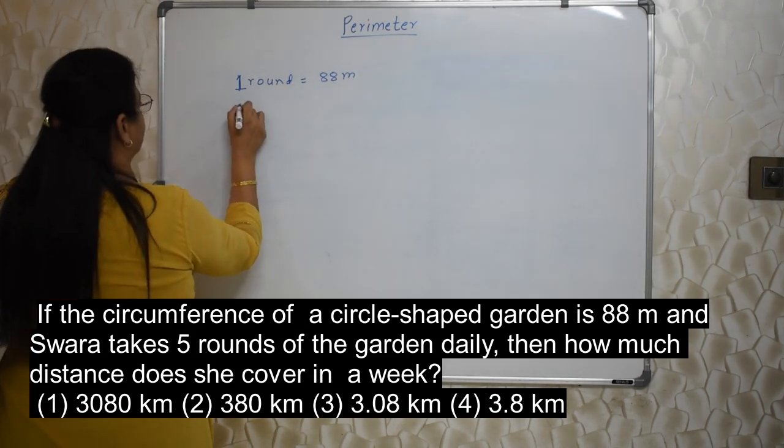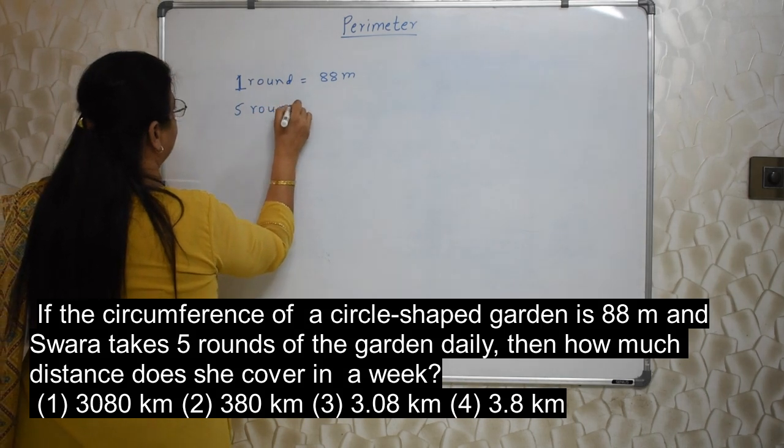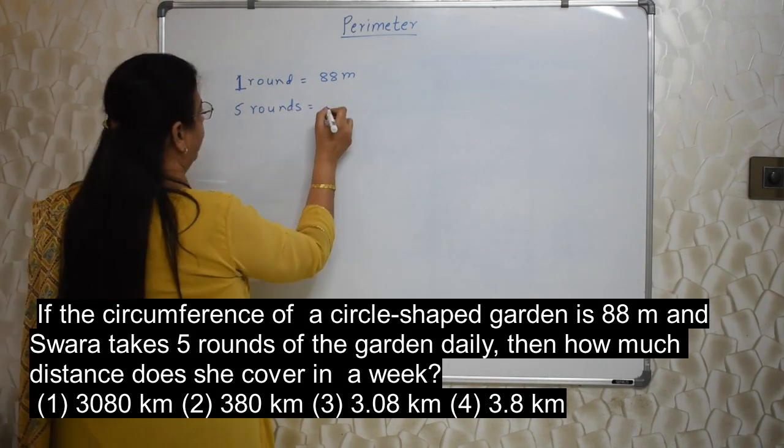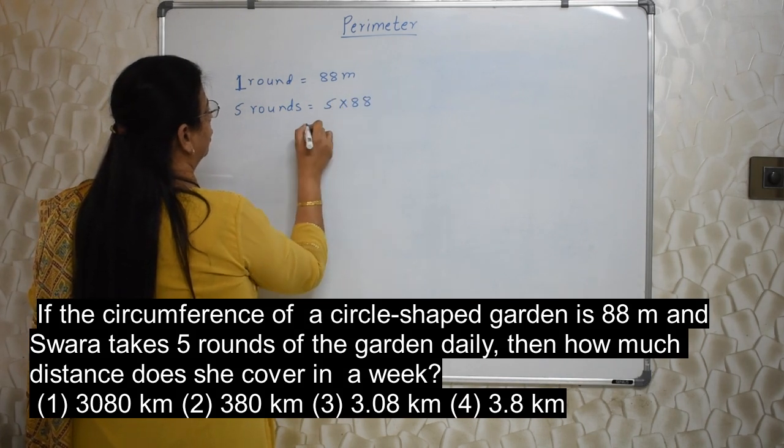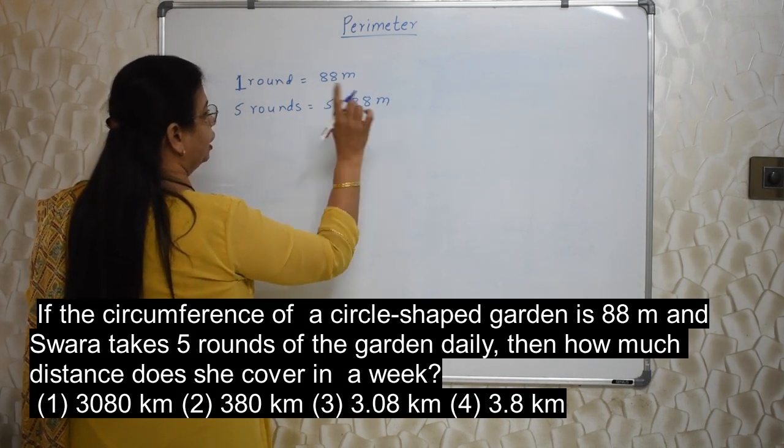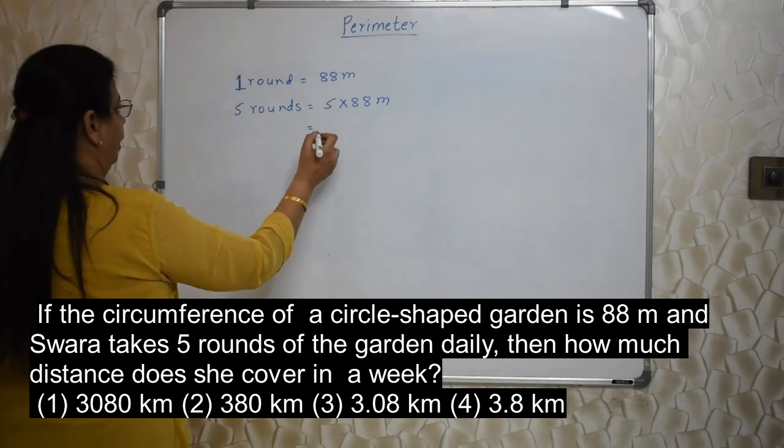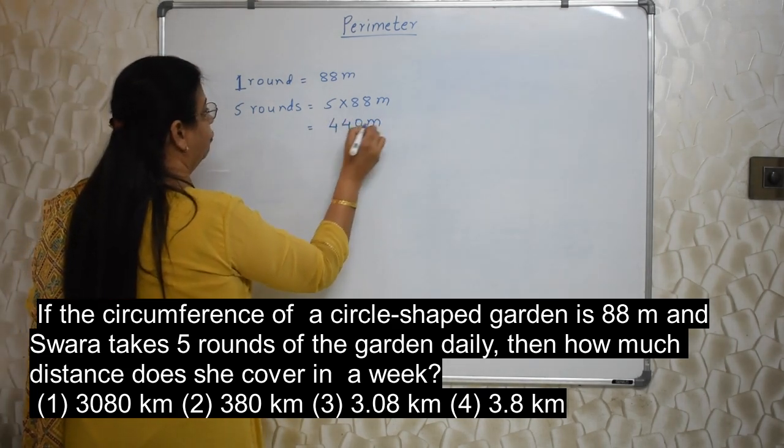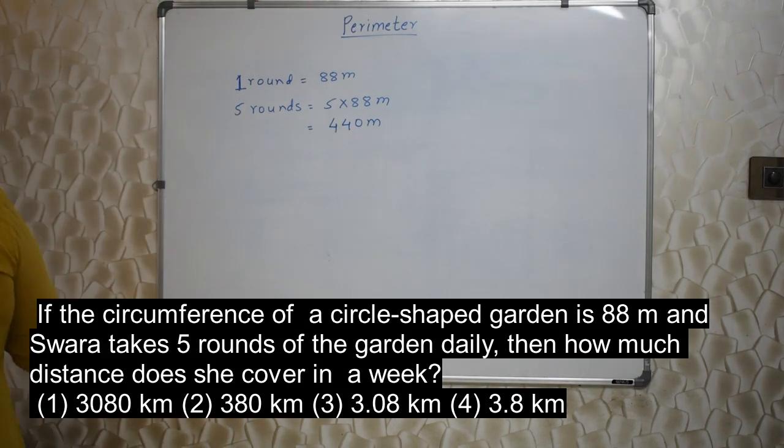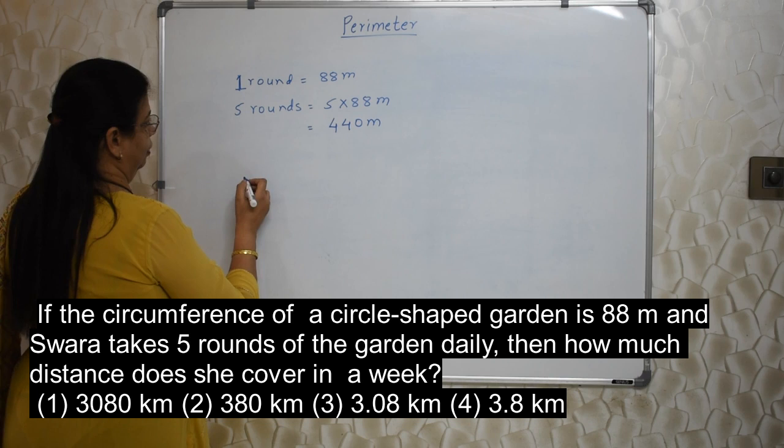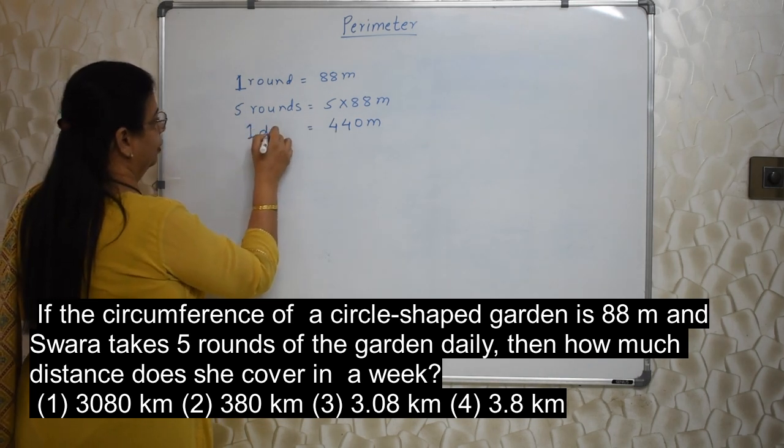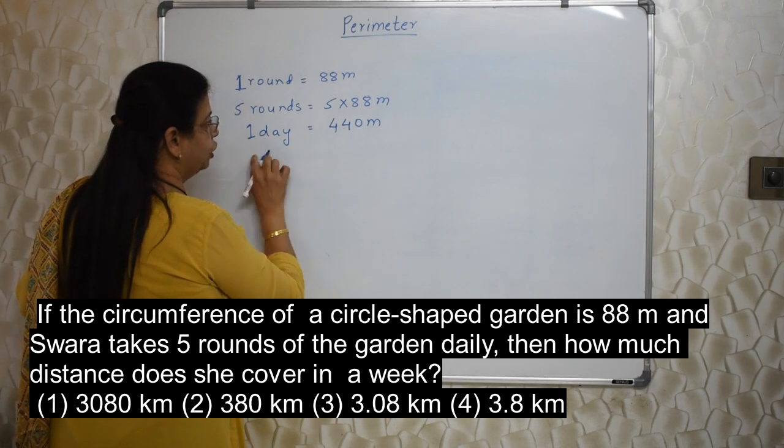Here the sum is based on circle shaped garden. So one circumference of that circular garden means one round. So what does Swara do? She is taking 5 rounds daily. So how much is the distance she will be covering? 5 into 88, isn't it? Meters. Here meter, kilometer is very important. Units are very important. So 5 into 88 is how much? 440 meters in 5 rounds. So does she take 5 rounds only 1 day? No.